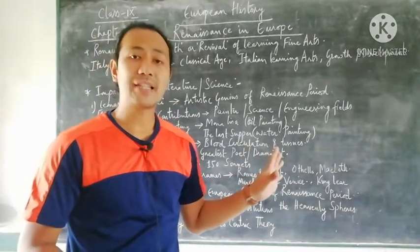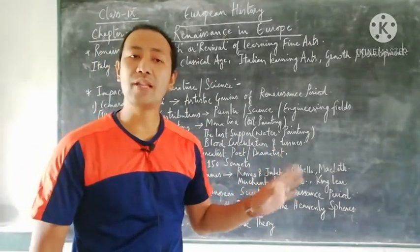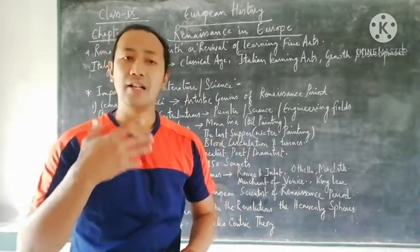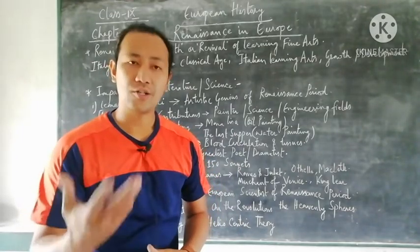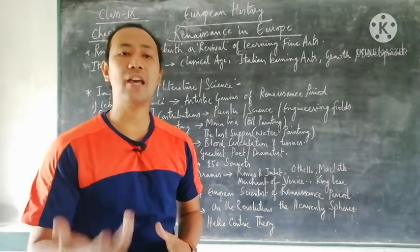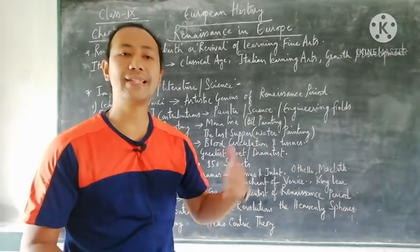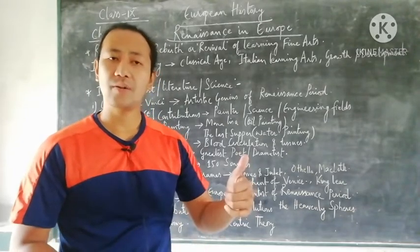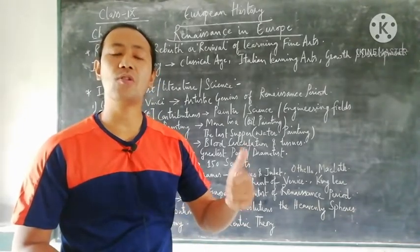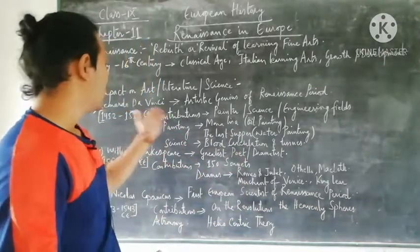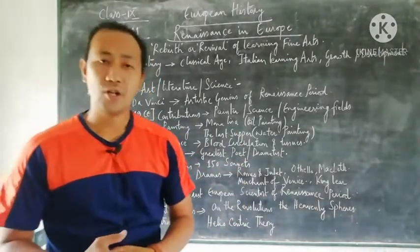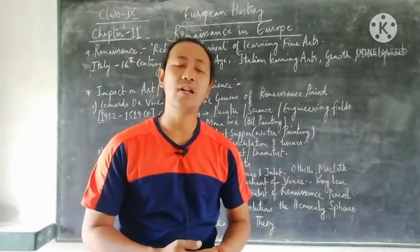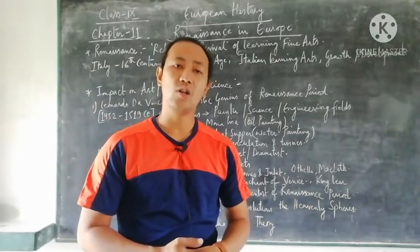In this topic we will discuss mainly three great innovators and contributors who gave their efforts during the 16th to 17th century. They are: first, Leonardo da Vinci; followed by William Shakespeare; and third, Nicholas Copernicus.